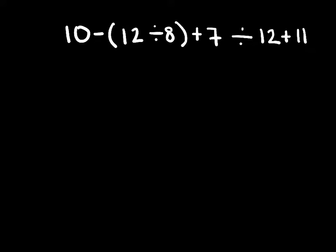So again, we're going to do parentheses first. Inside this parentheses, we have 12 divided by 8. So 12 divided by 8 is 1 1⁄2. So we have 10 minus 1 1⁄2 plus 7 divided by 12 plus 11.